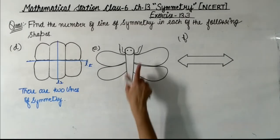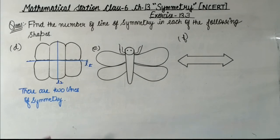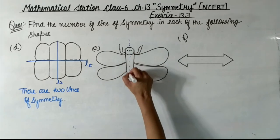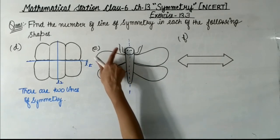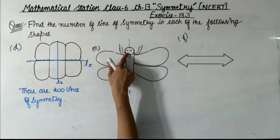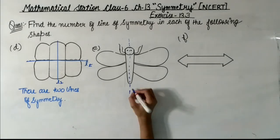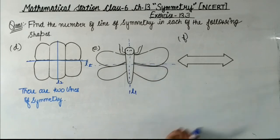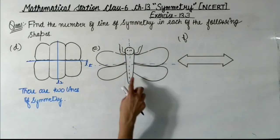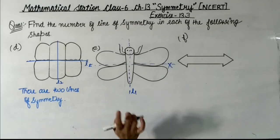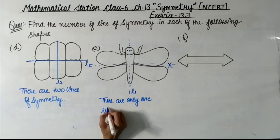Now next is Part E. In Part E we have a shape of a butterfly. We draw a line of symmetry in the center. There are two wings on each side, the body is half on each side, the hands are two on each side, and the eyes are on the left and right sides — so this vertical line L1 divides the figure into two equal parts. A horizontal line would not work because the wings above and below are not identical. So there is only one line of symmetry.